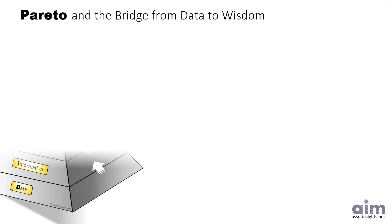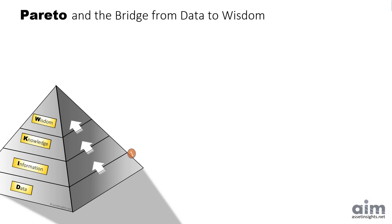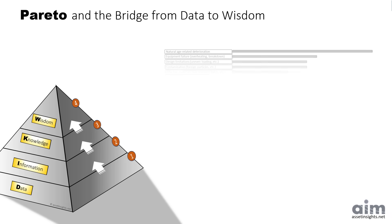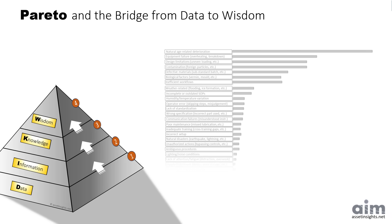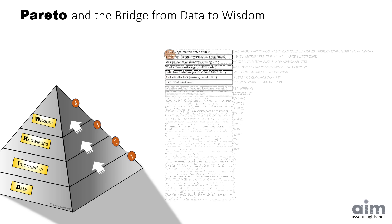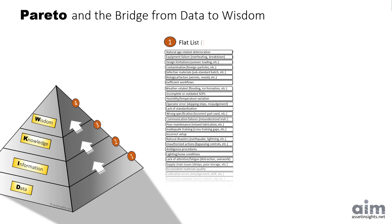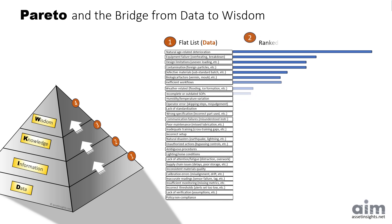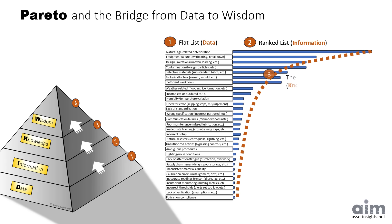In an earlier video, we explored the DIKW pyramid — how raw data evolves into wisdom. Pareto analysis helps us climb that pyramid. It transforms a flat list of root causes, the data, into a ranked list, the information. From there, we gain understanding of why failures occur — knowledge — which guides our wisdom in deciding where to act first. Pareto doesn't just organize information; it sharpens insight.